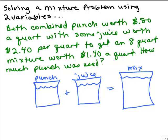Now, what do I know about the quantities? How much punch and how much juice? Well, I don't know how much punch and I also don't know how much juice. But I do know that there's 8 quarts in the mixture. And since I know neither of these, this is where the two variables come in nice and handy. Let's just let one of them be x and the other one be y.